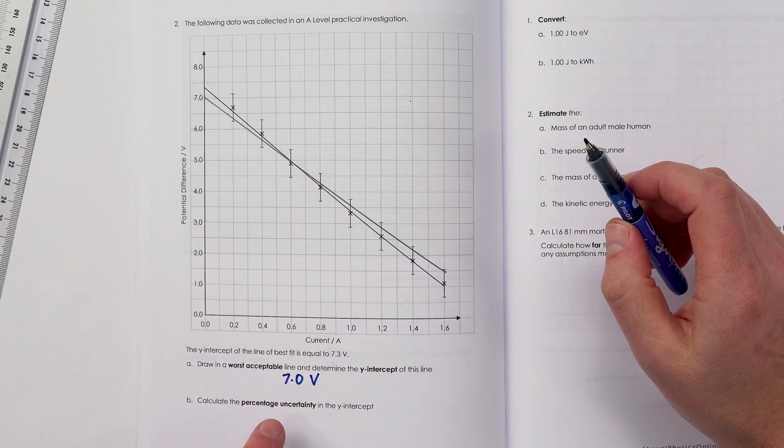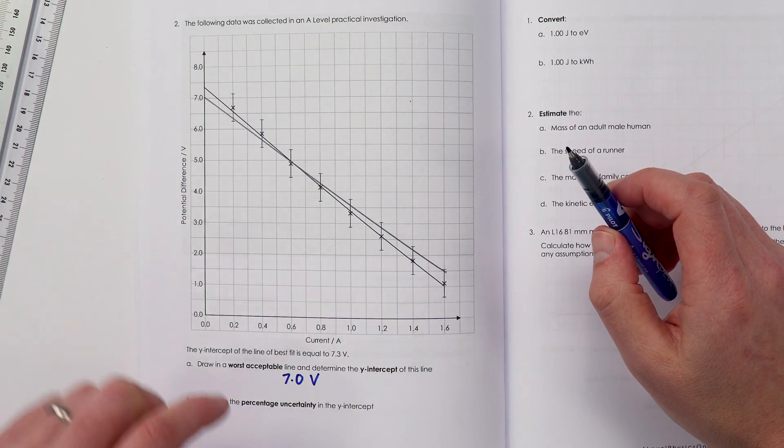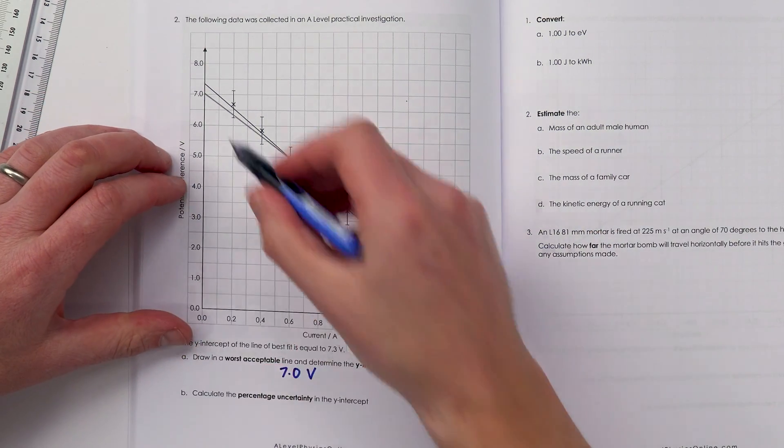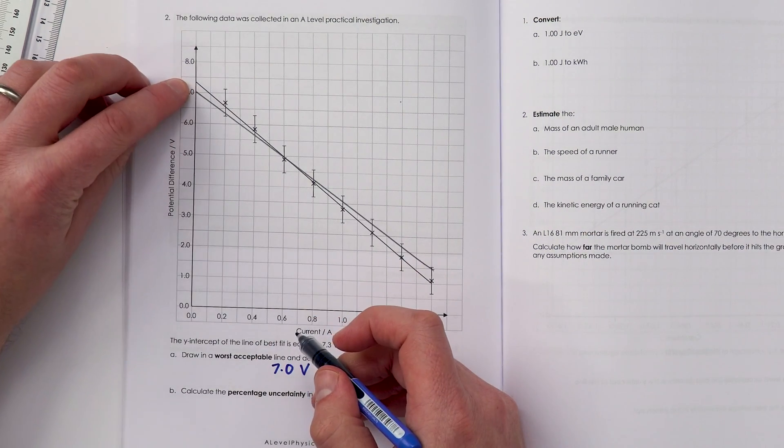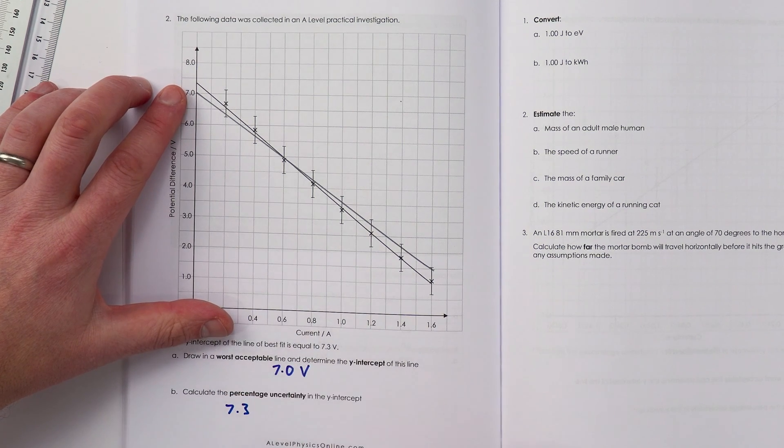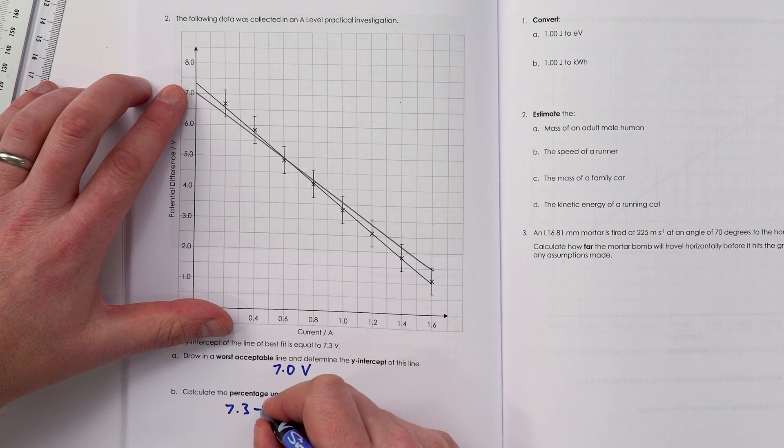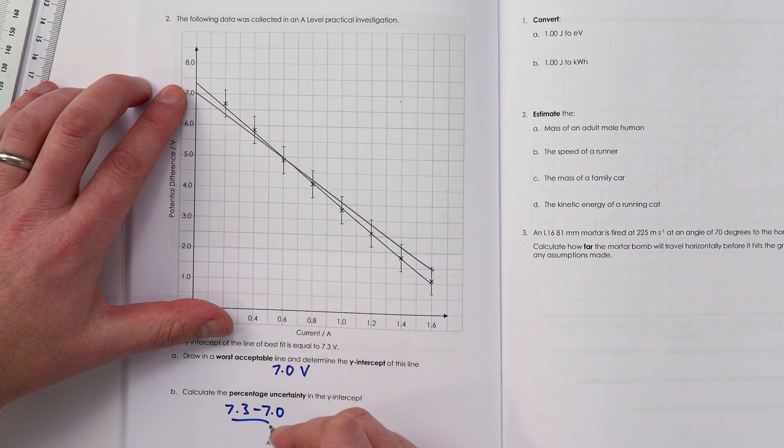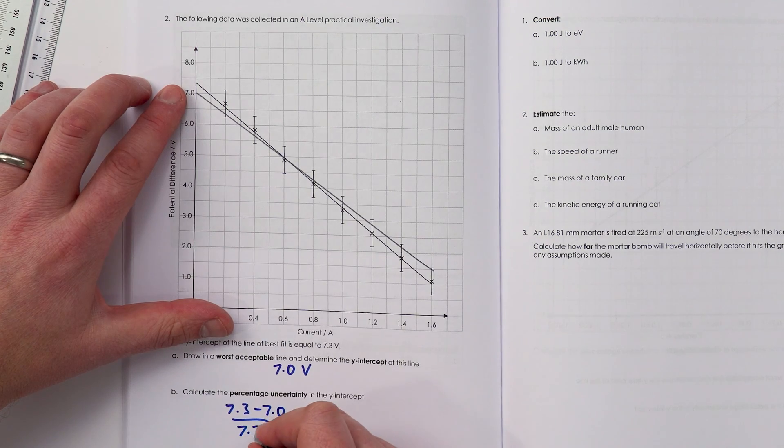Calculate percentage uncertainty in the y-intercept. That's going to be equal to our line of best fit, which I reckon, looking up here, is about 7.3 volts. We're going to take away this value, 7.0, and divide by the line of best fit value.